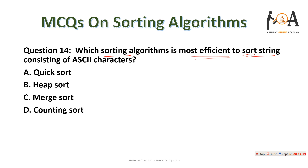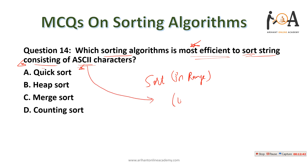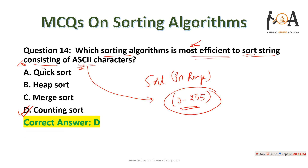The next question: which sorting algorithm is most efficient to sort a string consisting of ASCII characters? Whenever we want to sort elements within a particular range — ASCII values are in the range 0 to 255 — counting sort is the most efficient choice. So option B — counting sort — is the correct answer.